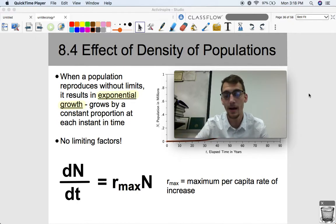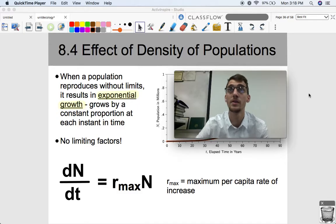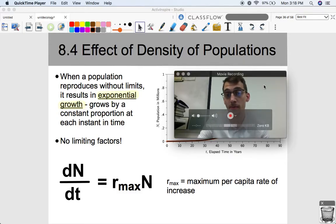So high-density populations are going to be more likely hindered by competition for resources, territorialism, predation, disease, all sorts of stuff that's going to reduce population growth.